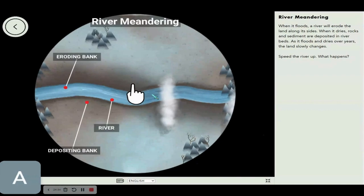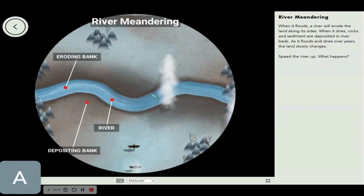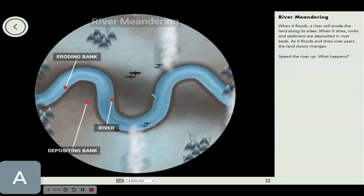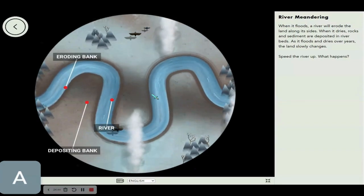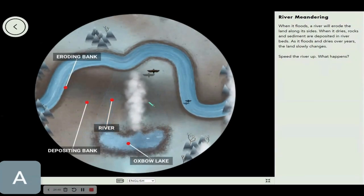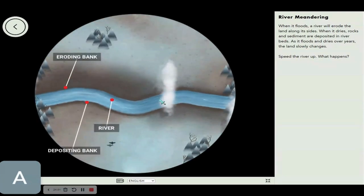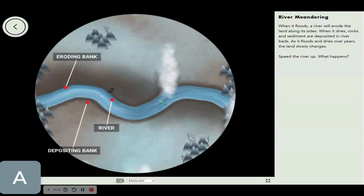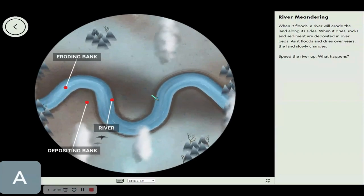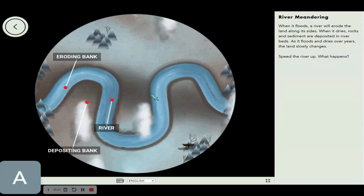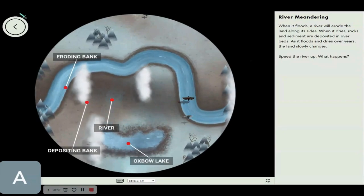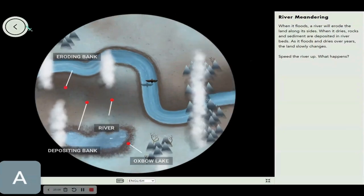River meandering. When it floods, a river will erode the land along its sides. When it dries, rocks and sediment are deposited in river beds. As it floods and dries over years, the land slowly changes. This time, it forms something called an oxbow lake. Once these two portions of the river join together, the remaining portion is called an oxbow lake and is dried until this happens. The river disconnects and forms a new river and an oxbow lake.